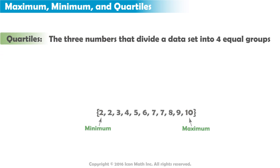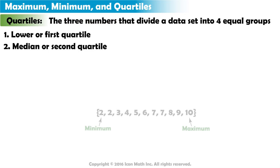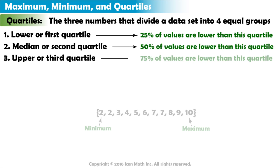Now let's explore the concept of quartiles. The three quartiles are the lower quartile or first quartile, the median or second quartile, and the upper or third quartile. 25% of the data values will be lower than the first quartile, 50% will be lower than the second quartile or median, and 75% of the values will be lower than the third quartile.